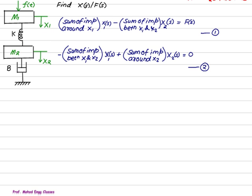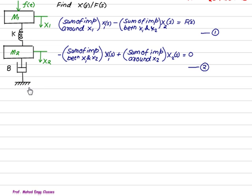For another example, we want to find x(s)/f(s). We have two masses, m1 and m2. The force f(t) is applied on m1, having displacement x1, and mass m2 has displacement x2. A spring k is connected between m1 and m2, so k is common to x1 and x2, and damper b is connected between x2 and ground.